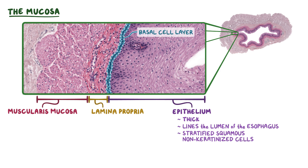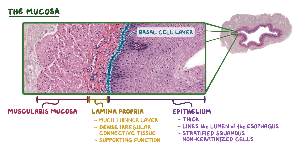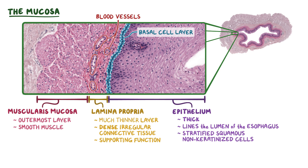The lamina propria is a much thinner layer of dense irregular connective tissue. It provides a supporting function to the epithelium, such as the blood vessels within the connective tissue that supply blood to the epithelium. The muscularis mucosa is the outermost layer of the mucosa and is comprised of smooth muscle. The muscle fibers in this image have a circular or dot-like appearance because the fibers run longitudinally, in the same direction as the esophagus.